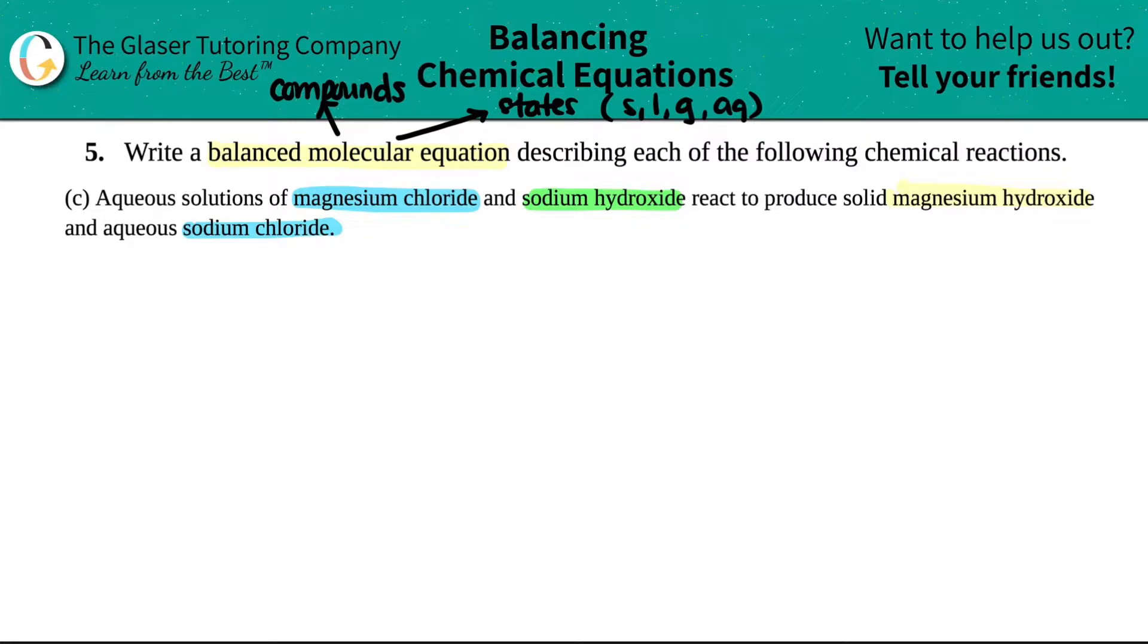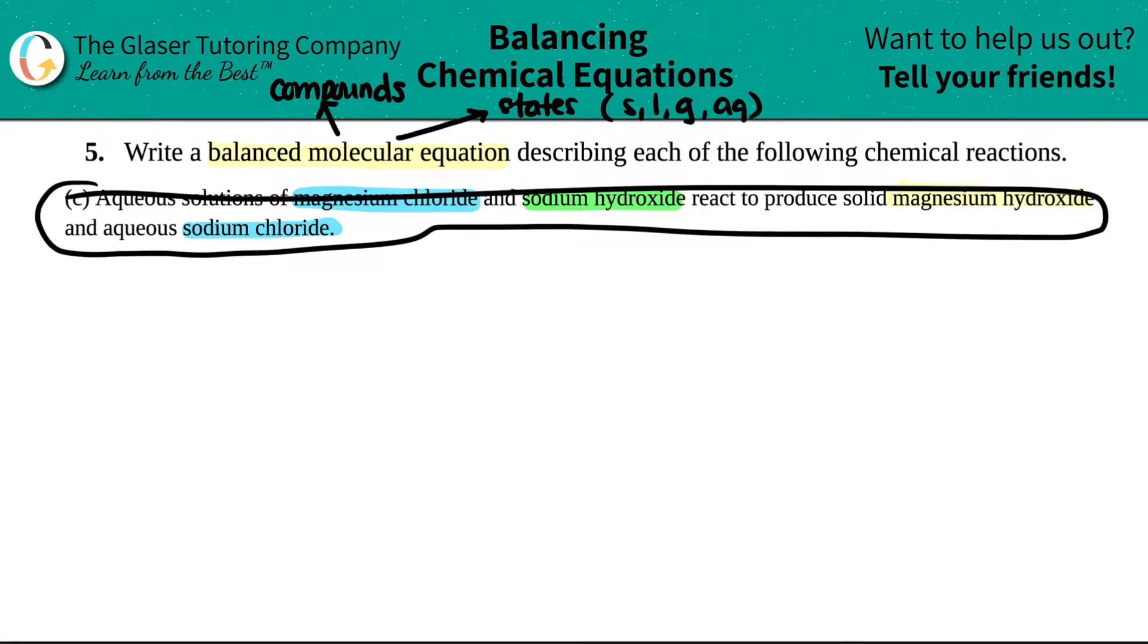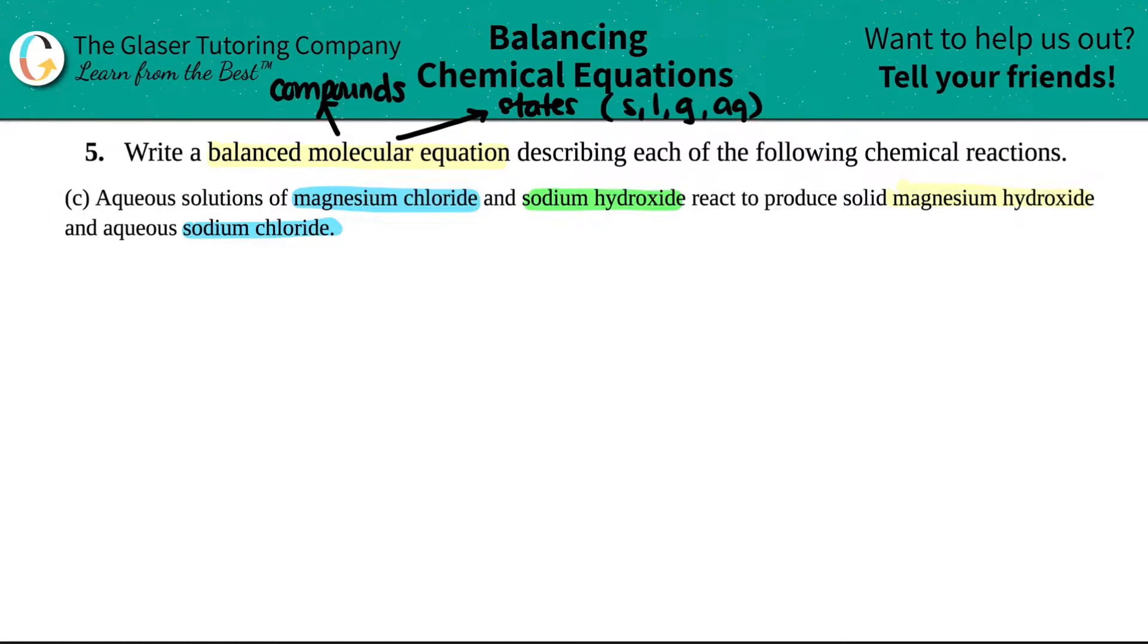So now with that in mind, let's literally take this super hard and crazy sentence and just turn it into something that we can understand in chemistry. So we have aqueous solutions of magnesium chloride and sodium hydroxide. Seems like magnesium chloride is in its aqueous form and sodium hydroxide is also aqueous. So I know that both of these are going to be aqueous, AQ.